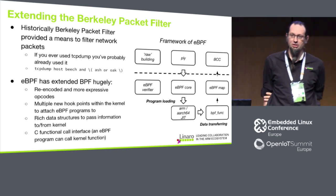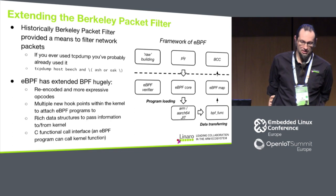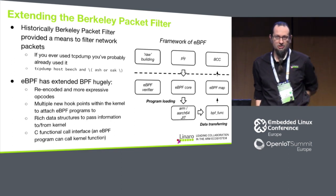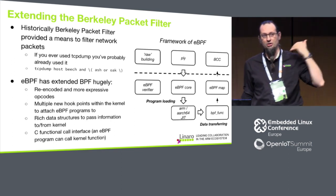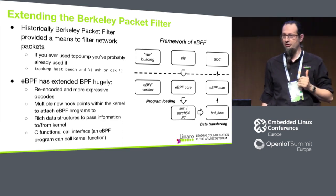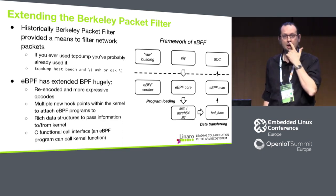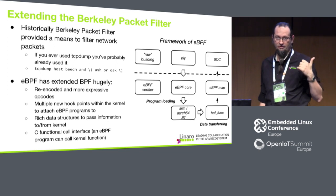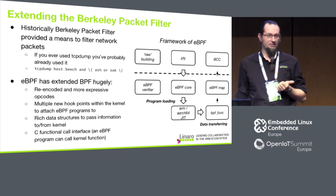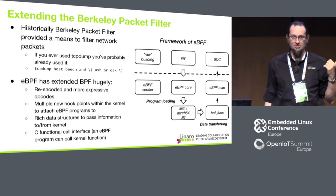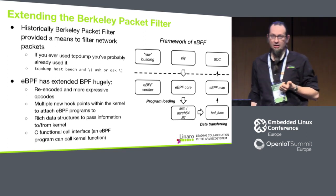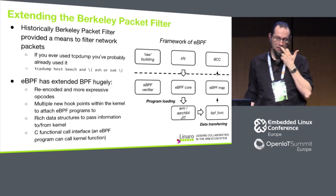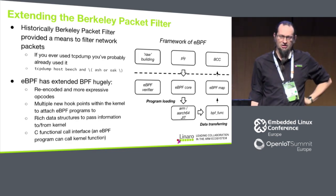What's changed eBPF so hugely and made it 'extended' is that it's been re-encoded, has more opcodes, and it can hook into different parts of the kernel way beyond its original scope on the packet filter. It comes both with fast function calls to get in and out of C very efficiently, and a rich set of data structures — particularly when you're using Kprobes BPF programs — that allow you to get data in and out of the kernel efficiently and effectively.